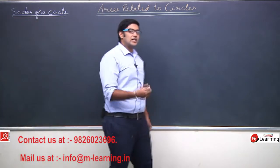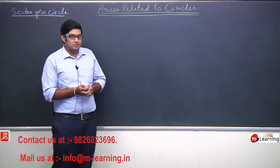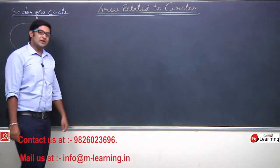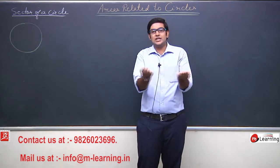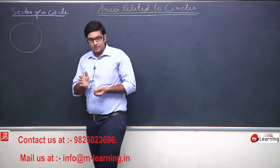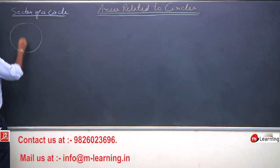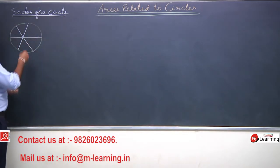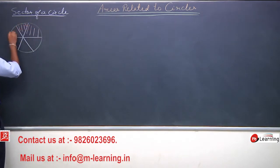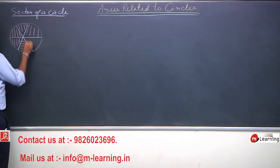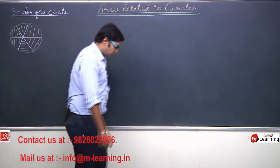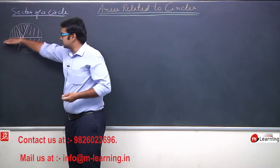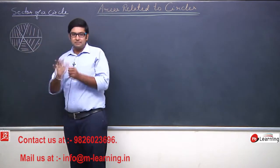Sector of a circle का क्या मतलब होता है? आपने पिज़ा खाया है, आपने केक खाया है. पिज़ा को जब आप ध्यान से देखेंगे, तो पिज़ा कुछ इस तरह से circular shape में होता है. और इस circular shape में होने के बाद, ये पिज़ा पूरा एक piece नहीं होता — एक पूरा circle नहीं होता. इस पिज़ा को काटा जाता है. जब हम cut करते हैं, तो इसे divide किया जाता है 1, 2, 3, 4, 5, and 6 pieces में. So the pizza breaks into six parts.